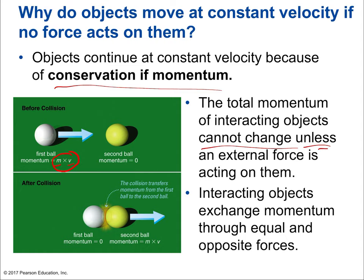You can change the momentum of a system, but that means you need to bring something from outside. For example, a comet moving through space will have the same momentum — its mass and velocity will not change unless something happens to it. It could lose mass, or gain velocity if an external gravitational force acts on it. Interacting objects exchange momentum through equal and opposite forces, which is completely consistent with Newton's third law. We can see that momentum is another way of thinking about Newton's three laws of motion.